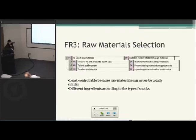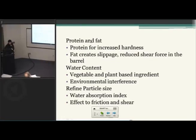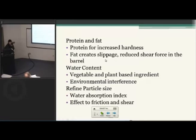You want to choose materials which have lower fat and protein content, and you also want to limit the water content in the materials you choose, and you want to break down the particle size as small as possible. Protein will increase the stiffness of the material, so it's not going to be as crispy. Fat creates slippage — because of the slippage, the materials are not going to be fully impacted by the screw, so it has less friction and gets only a limited amount of shear force.